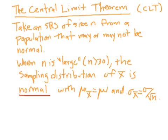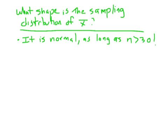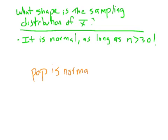The central limit theorem tells us the sampling distribution of x-bar is normal as long as n is bigger than 30, where n is your sample size. So there are actually two ways we know the sampling distribution of x-bar is normal: either the population itself is normal — that was the first example — or n is bigger than 30, which is the new idea of the central limit theorem.